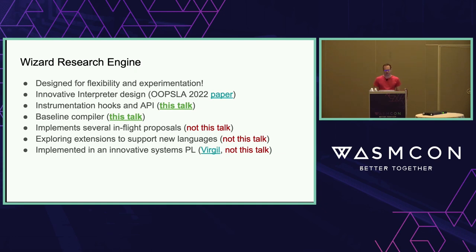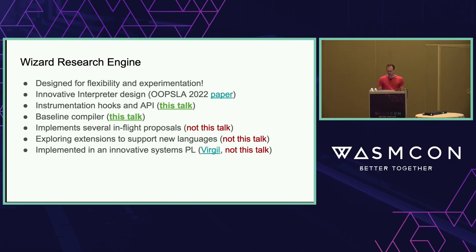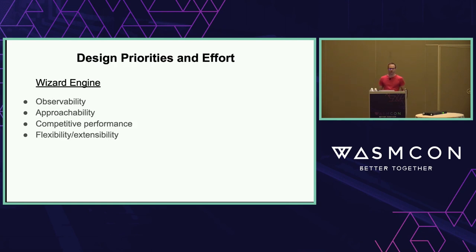One of the first things I published about Wizard's design was how to do an interpreter — how to interpret the WebAssembly bytes themselves rather than rewriting or compiling them. I won't go into that, but there is a paper. What I will talk about today is how we do instrumentation, which I think is really important for being able to analyze what a program does. We'll also talk a bit about the compiler. There are other things I won't cover: in-flight WebAssembly proposals like GC, exception handling, multi-memory, memory64 — several of those are already implemented in Wizard.